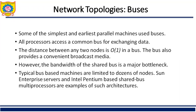Some of the simplest and earliest parallel machines use the bus topology. All processors access a common bus for exchanging data. The distance between any two nodes is O(1) in a bus. The bus also provides a convenient broadcast medium. However, the bandwidth of the shared bus is the major bottleneck. Typical bus-based machines are limited to dozens of nodes. Sun Enterprise Server and Intel-based shared multiprocessors are examples of such architectures.